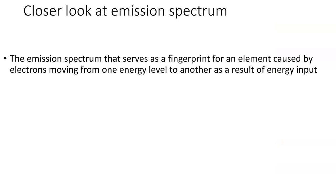The emission spectrum serves as a fingerprint for an element — it's caused by electrons moving from one energy level to another as a result of energy input. When you have an atom, you have shells. What happens is that when electrons in these shells jump to a higher shell as a result of energy input, they come back down and produce colors. Hydrogen only has one electron, but from that earlier diagram it had four bands — meaning hydrogen's electron jumps from the first to the second, first to the third, first to the fourth, and so on, giving four different jumps.